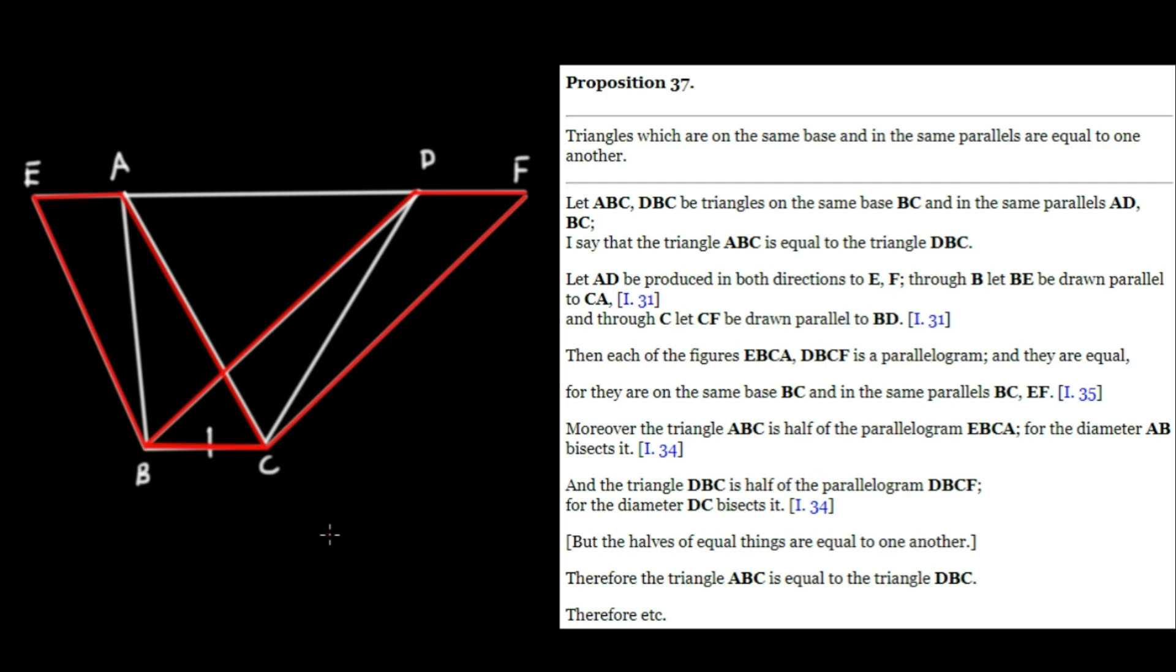Now notice that the original triangle ABC is half this parallelogram, because we proved in Proposition 34 that the diameter, namely AB, bisects the parallelogram. That's why ABC is half.